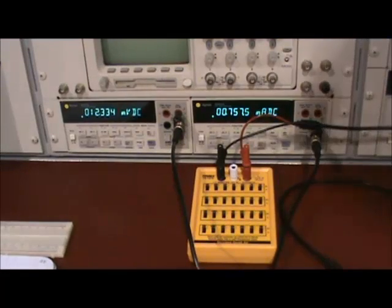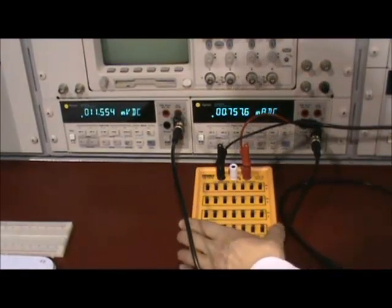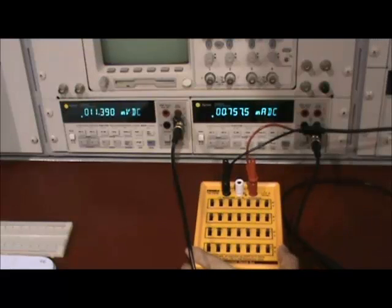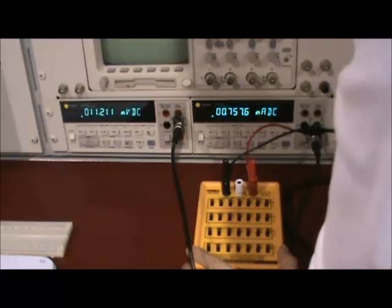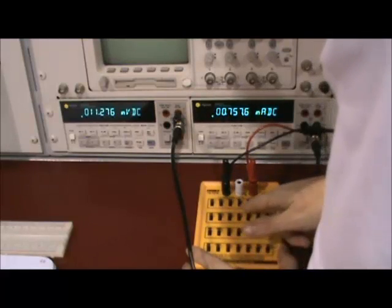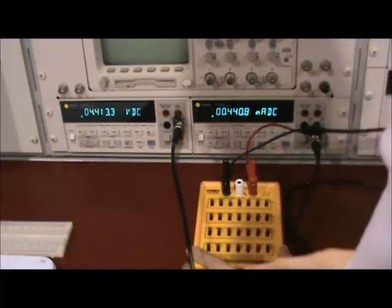When you are preparing to take a lot of data, it is a good idea to check one data point to verify that the circuit and the DMMs are set up correctly. Check the data point that you calculated in the pre-lab, where you set R equal to 10 kOhms.